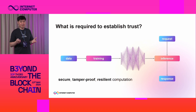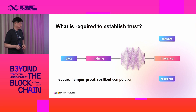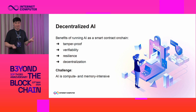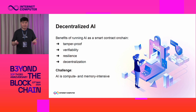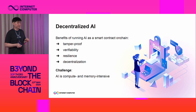Since you all came to the blockchain event, I hope the keywords I mentioned ring some bells — secure and tamper-proof — that's what smart contracts are supposed to do. Besides those, they have nice properties like verifiability, resilience, and decentralized ownership — all these nice properties.